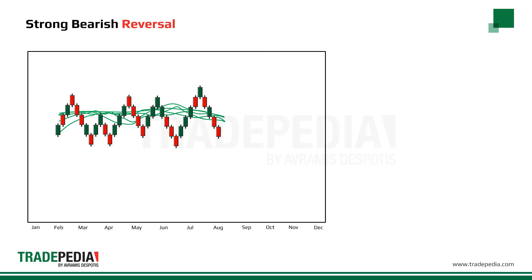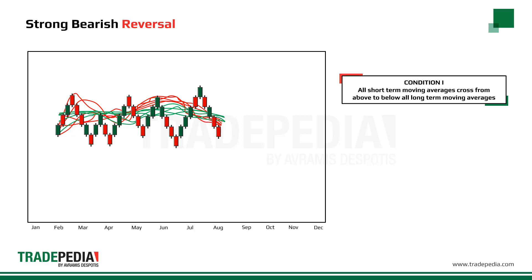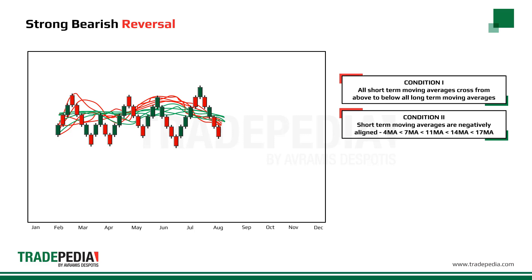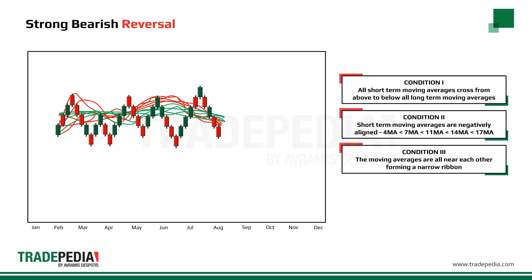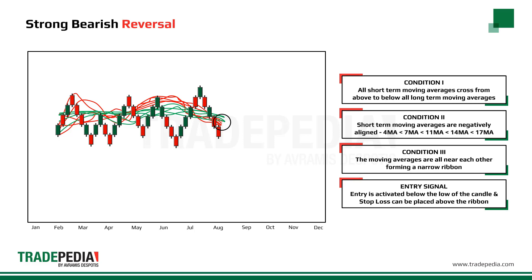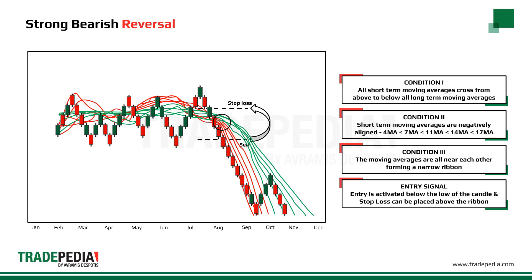A strong bearish reversal signal is given when the following conditions are met. Condition one: all short-term moving averages cross from above to below all long-term moving averages. Condition two: short-term moving averages are negatively aligned — that is, the 4 period average is below the 7th, the 7th below the 11th, the 11th below the 14th, and so on. Condition three: the moving averages are all near each other, forming a narrow ribbon. The entry is activated below the low of the candle that generated the signal, and a stop-loss can be placed above the moving average ribbon.